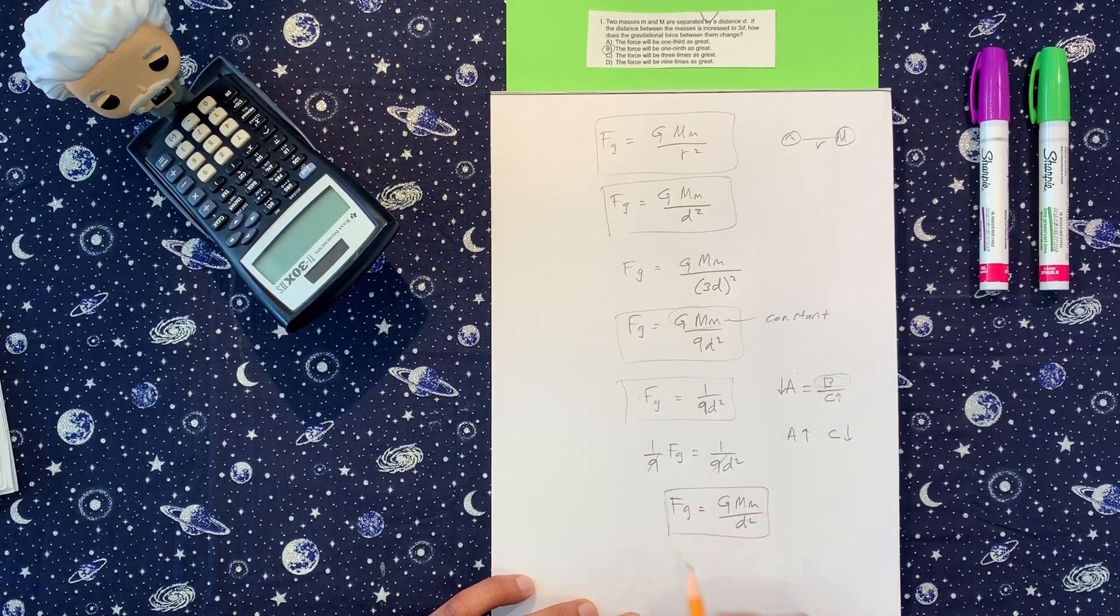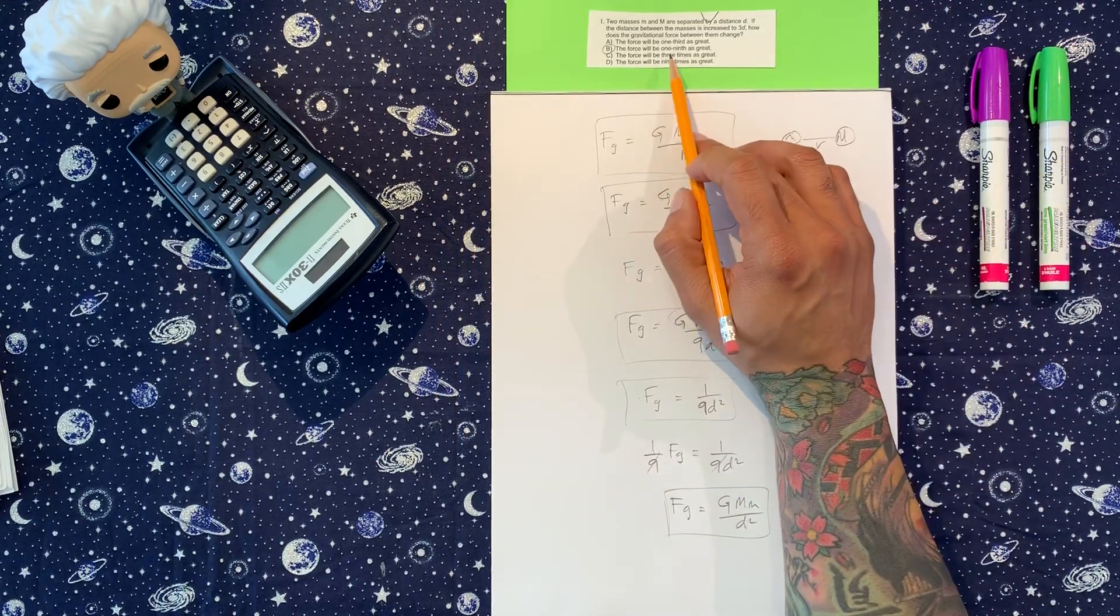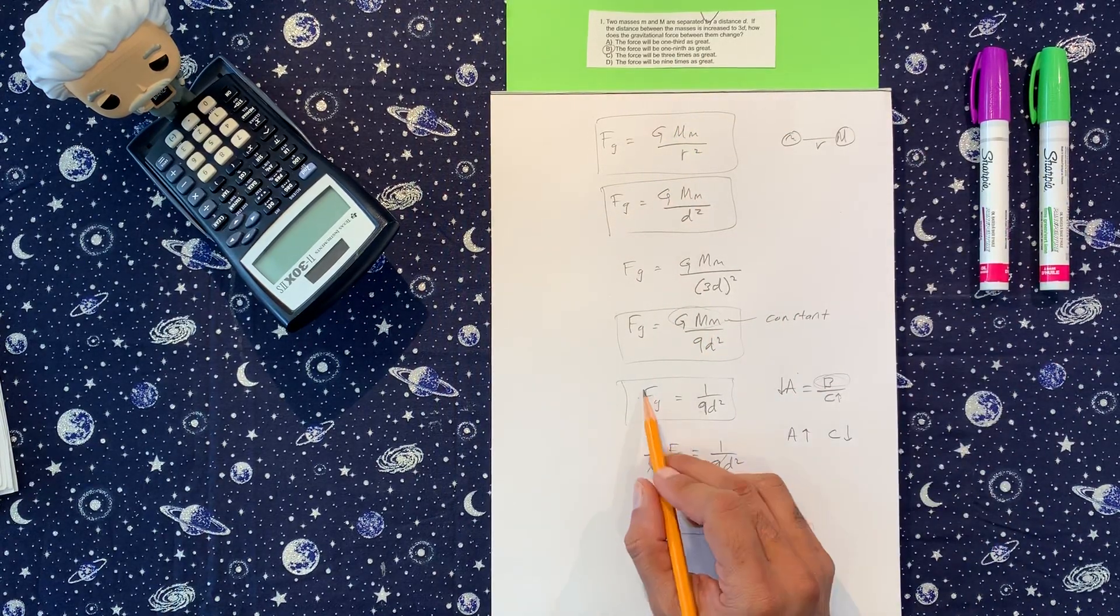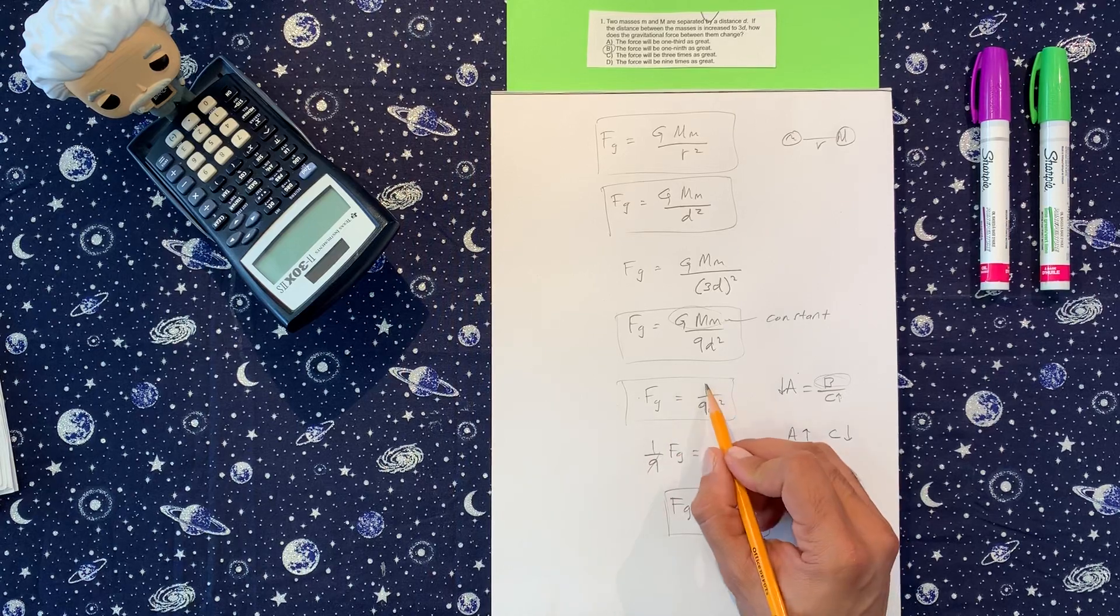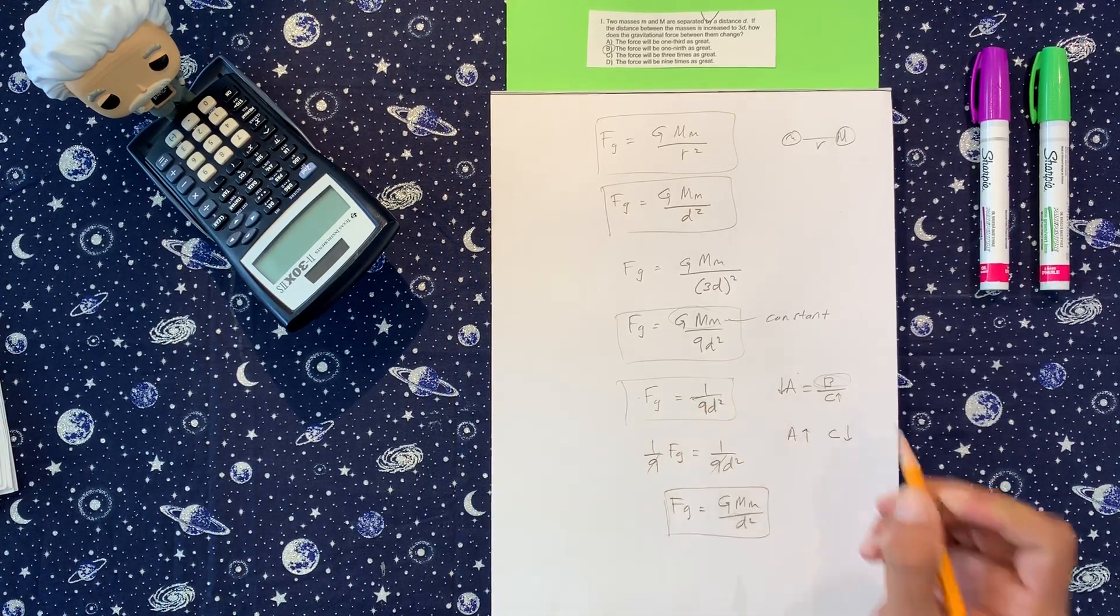Okay, so F is going to be 1/9th as great because here we clearly see that F is 1/9th and then you got your d squared on the bottom.